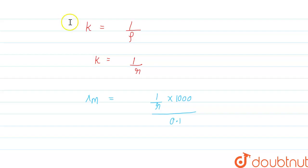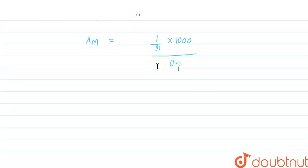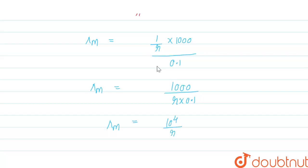Rearranging the terms, lambda M equals 1000 upon r into 0.1, which simplifies to 1000 upon 0.1r. So the molar conductivity lambda M equals 10 raise to the power 4 upon r. This is the molar conductivity of the solution.